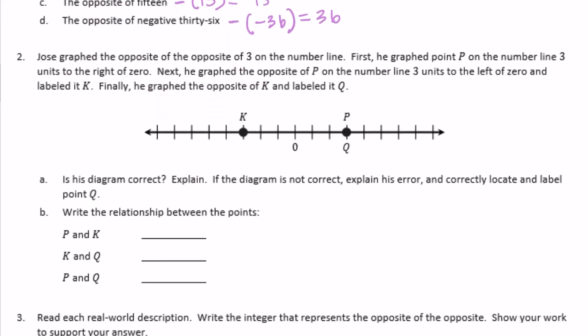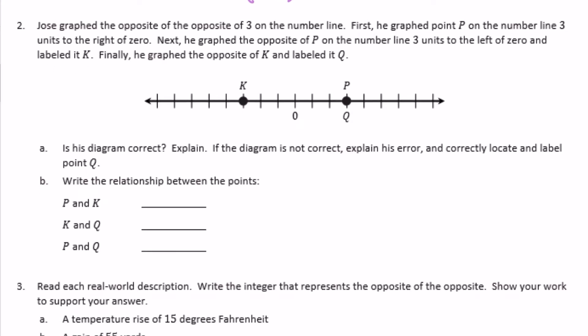Number 2. Jose graphed the opposite of the opposite of 3 on the number line. First, he graphed point P on the number line, 3 units to the right of 0. Next, he graphed the opposite of P on the number line, 3 units to the left of 0, and labeled it K. Finally, he graphed the opposite of K and labeled it Q. Is his diagram correct? Explain. If the diagram is not correct, explain his error and correctly locate and label point Q.